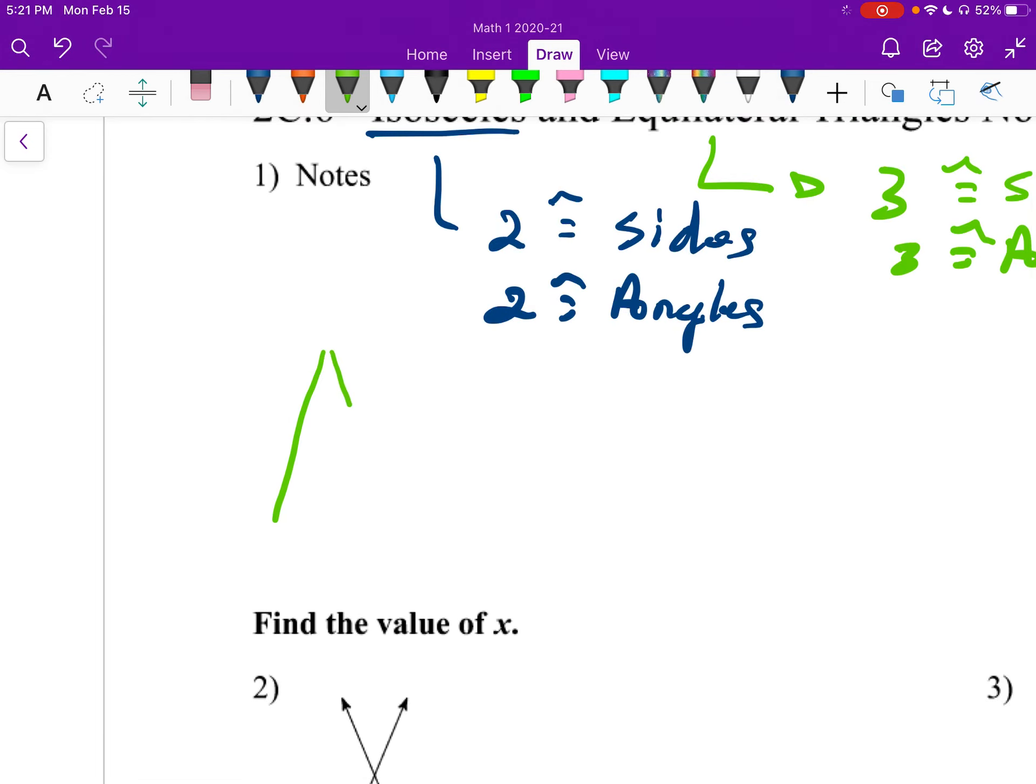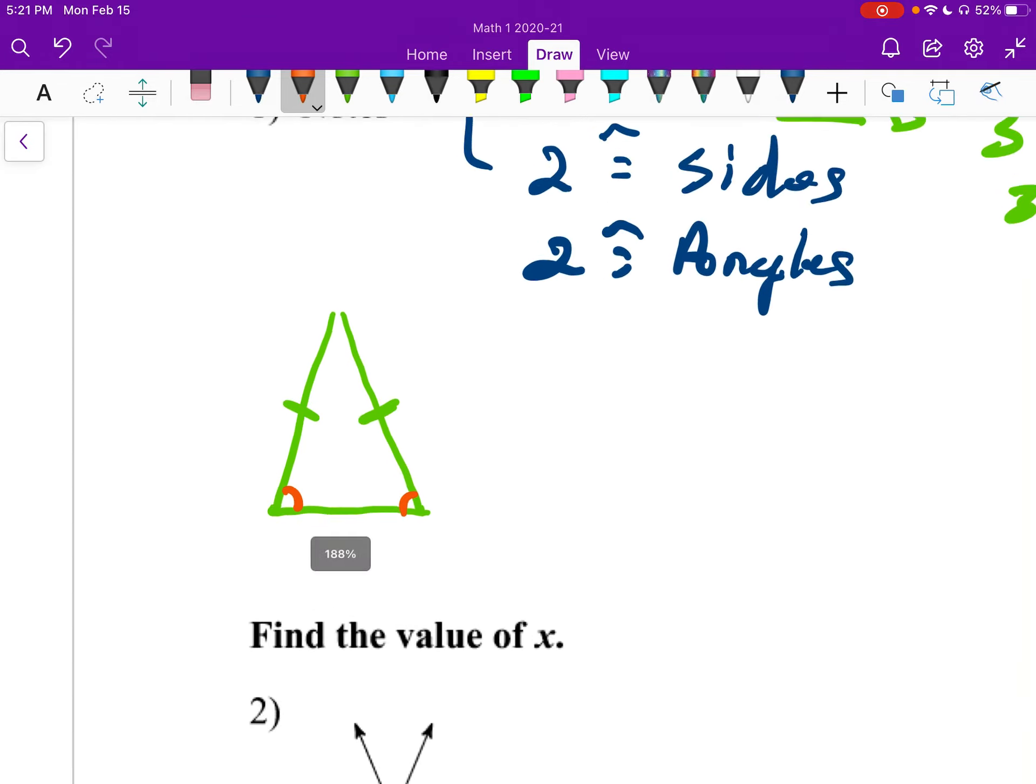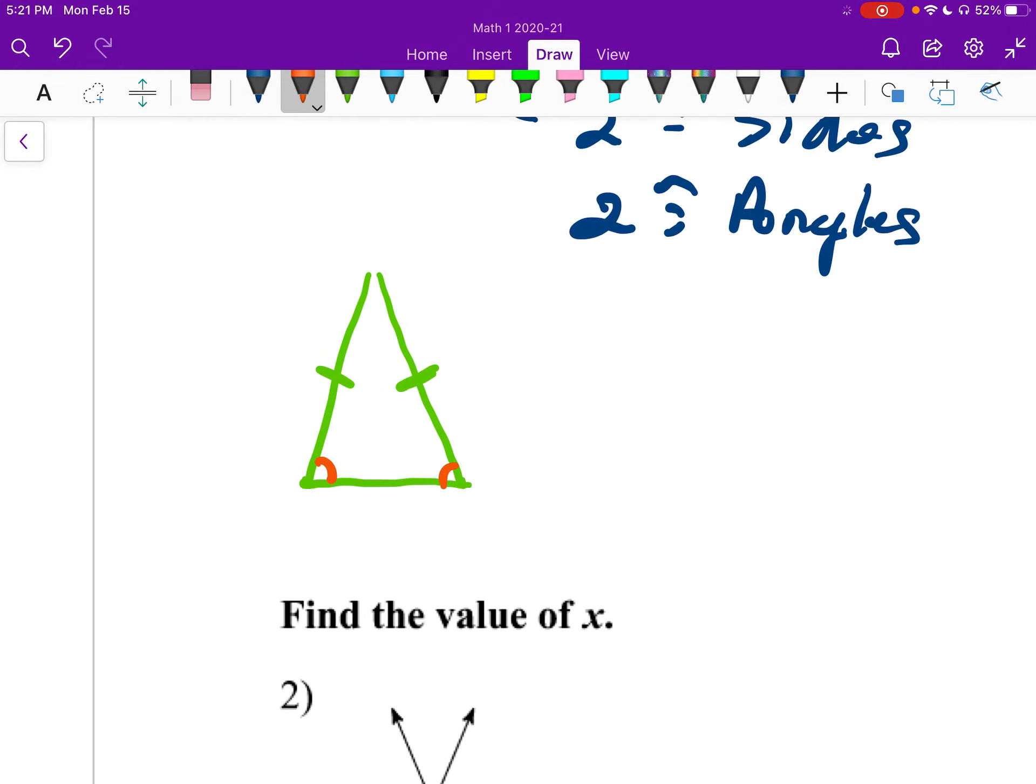If we have an isosceles triangle like this, where this is congruent to this, then the angles opposite the sides are congruent. Let me draw that in. If you draw an arrow out of this side, it touches that angle, and out of this side, it touches that angle. That can help us remember which ones are going to be congruent.